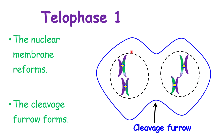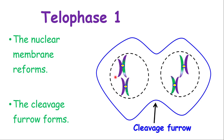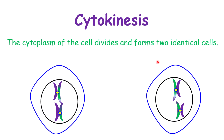In telophase 1, the nuclear membrane starts to reform, and the cleavage furrow begins to form as well. The nuclear membrane forms around the chromosomes on opposite sides while the cytoplasm divides, ensuring each cell has its own set of chromosomes. When that is finished, we go into cytokinesis, which splits the cell right in the middle and produces two new cells with their chromosomes. You'll notice the color pattern is already starting to become visible.